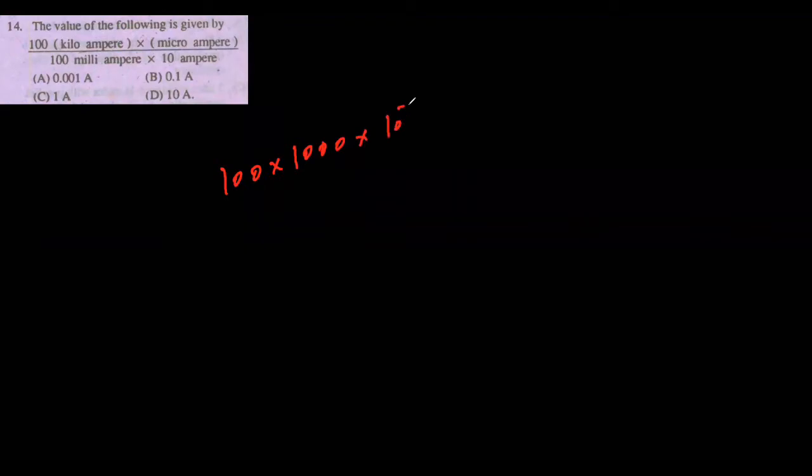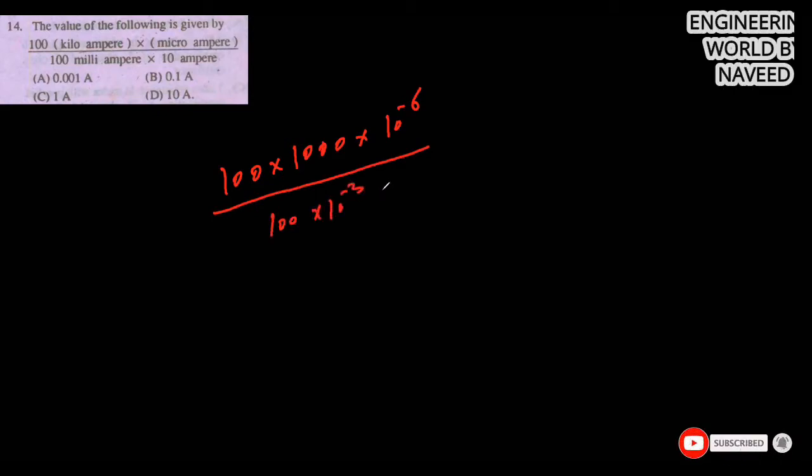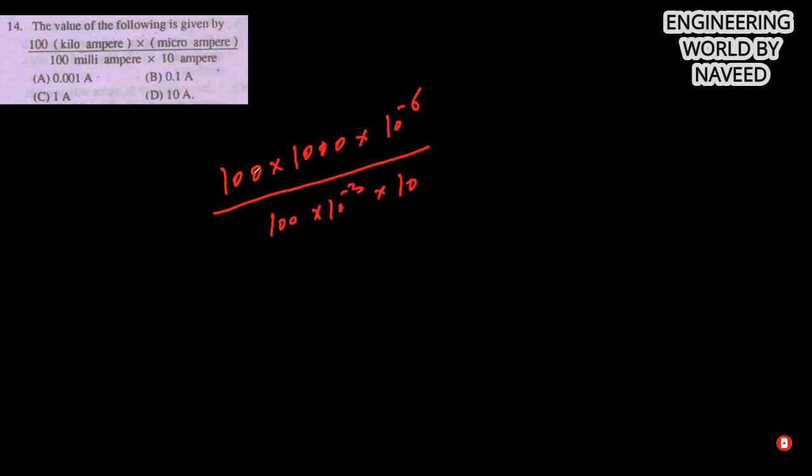The next MCQ: the value of 100 kilo-amperes times micro-amperes divided by 100 milli-amperes times 10 amperes. Options are 0.001 ampere, 0.1 ampere, 1 ampere, and 10 ampere. Here we have 100 times kilo, so kilo has three zeros, and micro is 10 to the power minus 6, divided by 100 times milli, that is 10 to the power minus 3, times 10 ampere.